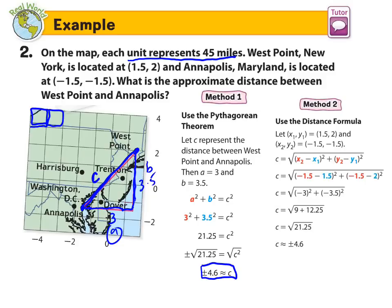The second method is using the distance formula. So we know the points for West Point is (1.5, 2), and we know Annapolis is (-1.5, -1.5). We'll make this x₁, this x₂, y₁, y₂. So x₂ minus x₁, plug in the numbers. You can see here. y₂, which is 2, minus, sorry, y₂ is -1.5, minus 2 squared.